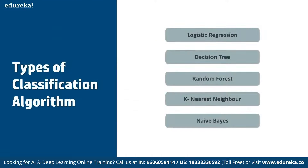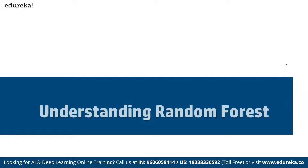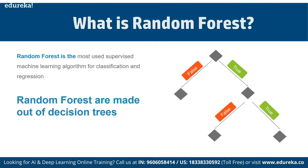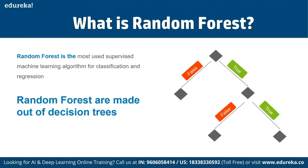In terms of types of classification algorithms, we have logistic regression, decision tree, Random Forest, K-nearest neighbors, and Naive Bayes. The Random Forest algorithm is a supervised classification and regression algorithm.